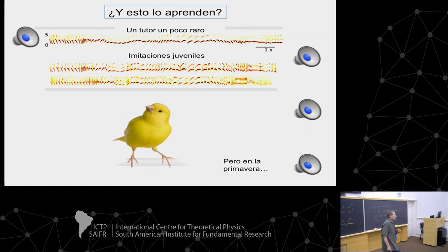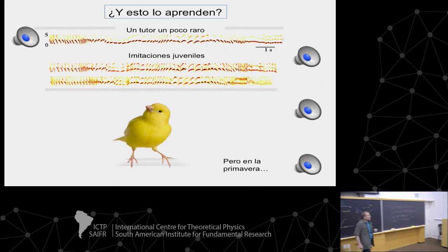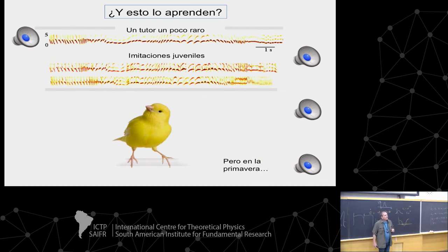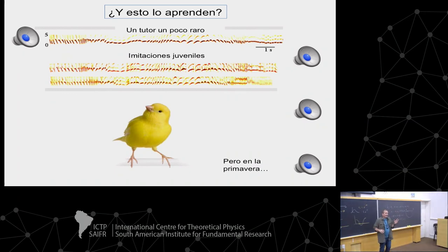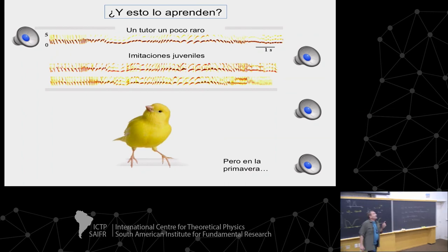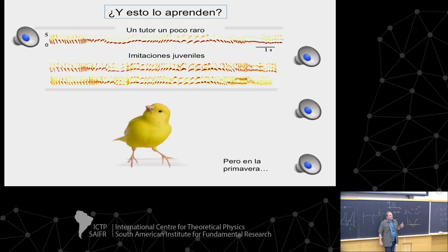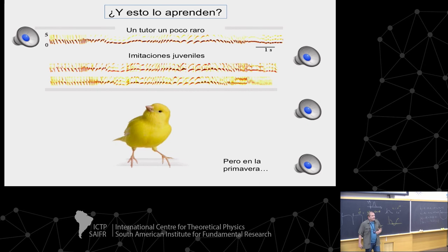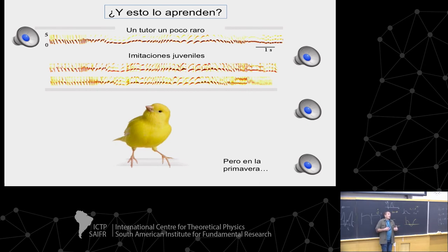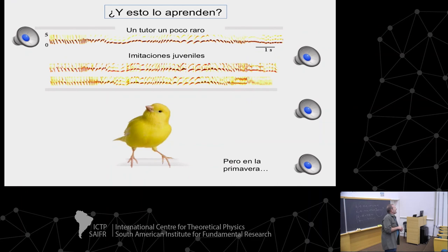Can you somehow induce a synthetic spring with hormones or something? If you ask a biologist what are the minimum ingredients for what happens in spring and reproduction, can you induce a synthetic spring? You can — chemically. You can put testosterone. We have pellets of testosterone and you can put testosterone cream on these birds and they will start to behave closer to how they behave in spring. Moreover, you can put testosterone in females and they will start to sing. So you can induce spring chemically with testosterone — it's a spring in a pill.